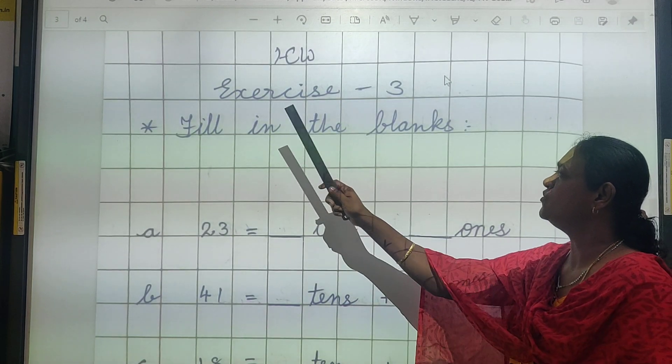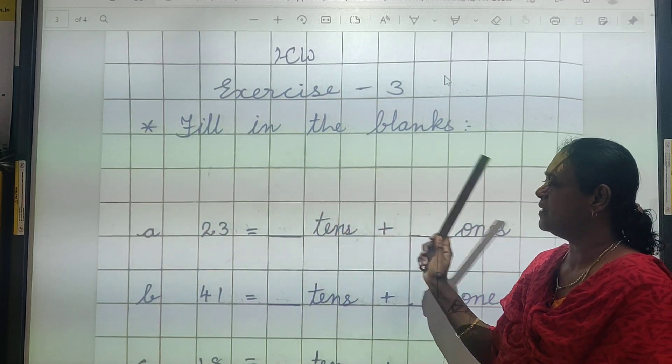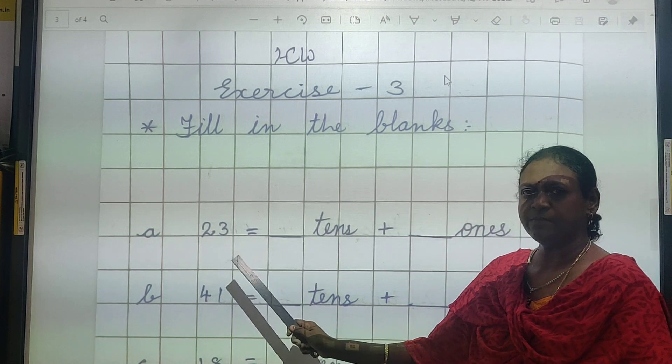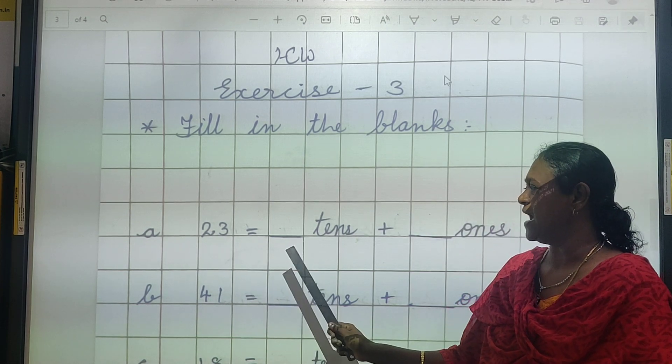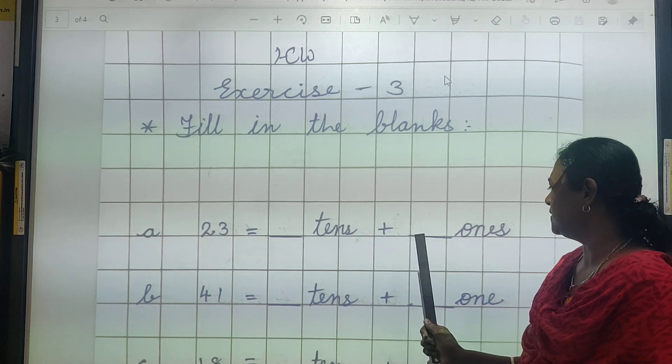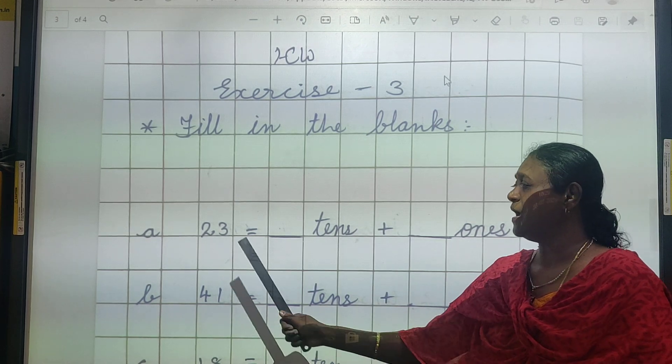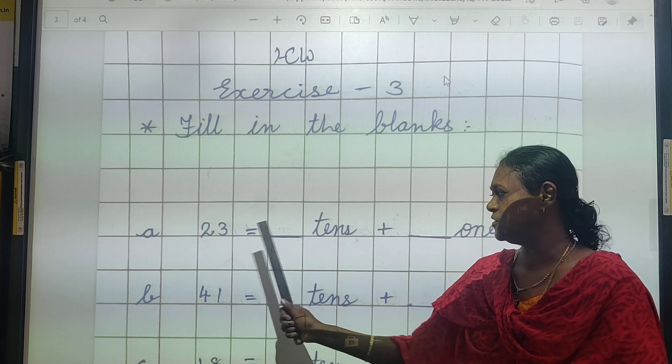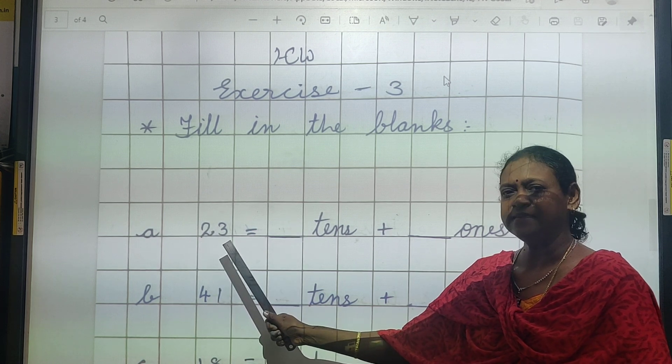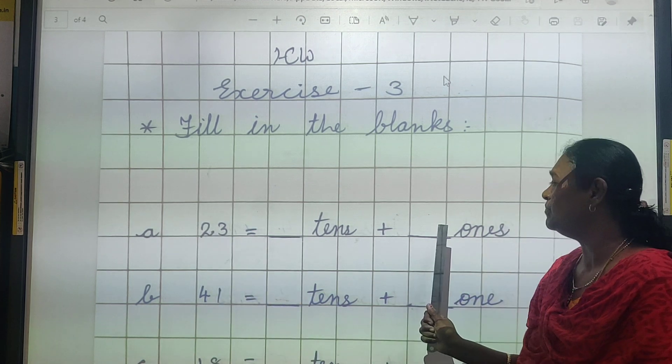Now this is done. Now 3rd thing you have to write: Exercise 3, fill in the blanks. 23 equal to dash tens plus dash ones. Now here you can write down dash side tens. So here you write down. And right side ones. So here you write down 3. Okay. This is 41, so 4 here you write down tens plus dash ones, so 1. Okay.